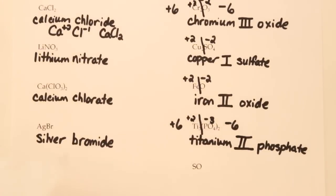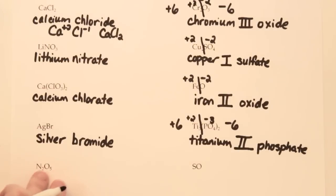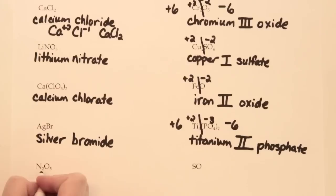So far all examples have been ionic compounds — metals with nonmetals. The covalent ones are different: we don't worry about charges or Roman numerals. We just need to say how many there are of each part. When naming a covalent compound, we use prefixes to indicate how many of each part there are.